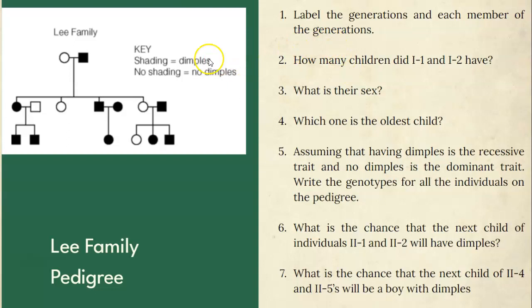In this pedigree we're going to do some labeling — label the generations and each member of the generation. When you label a generation you use Roman numerals: generation one, generation two, generation three. Within each generation we label or number our individuals. For our purpose we start over when we number — so individual one, individual two — then we go back to one, two, three, four, and continue until we've numbered all individuals.